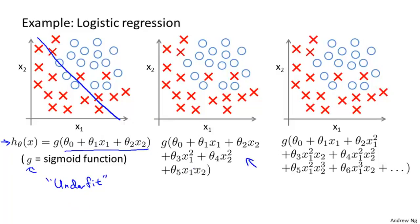In contrast, if you were to add to your features these quadratic terms, then you could get a decision boundary that might look more like this. And that's a pretty good fit to the data. Probably about as good as we could get on this training set.